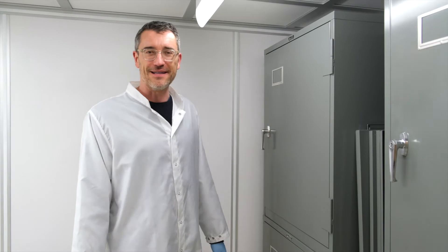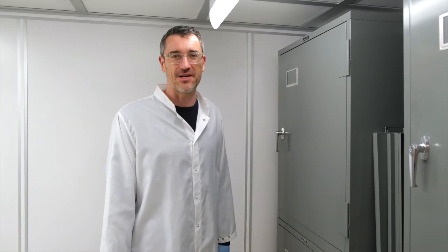Here we are inside the vault for the meteorite collection. Inside these cabinets is the majority of the meteorite collection at the U of A, which consists of almost 2,000 specimens from about 300 different meteorites from all around the world. I'll give you a bit of a tour of what we have in here.